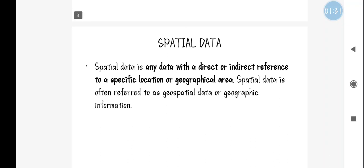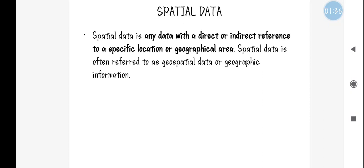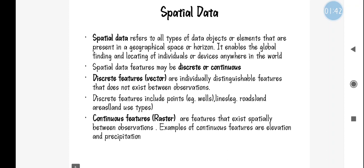Spatial data is nothing but the actual geographical data present in the real world — that is called spatial data. Spatial data is divided into two types. The first one is discrete data, that is a vector format.